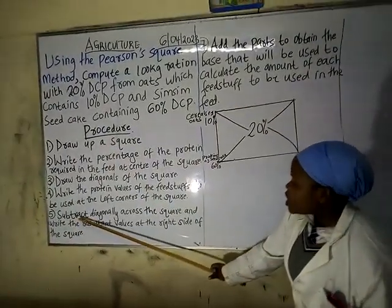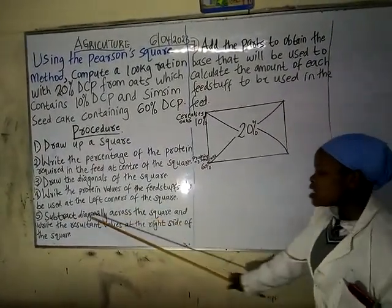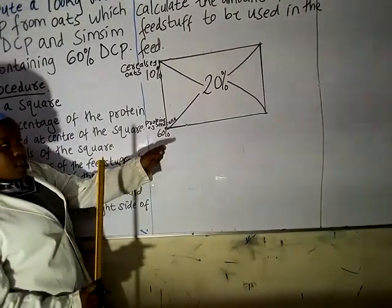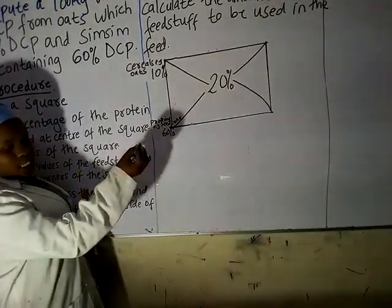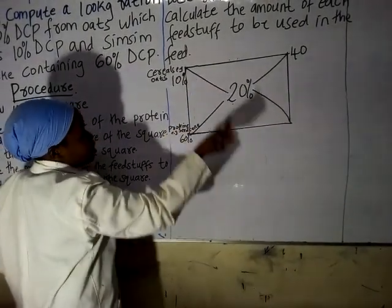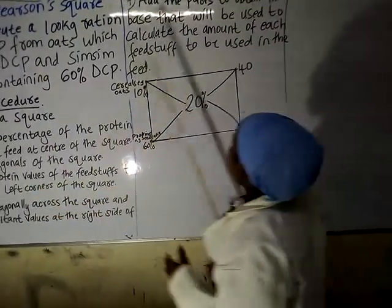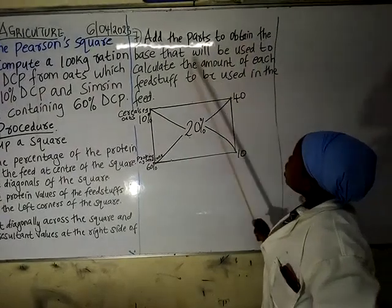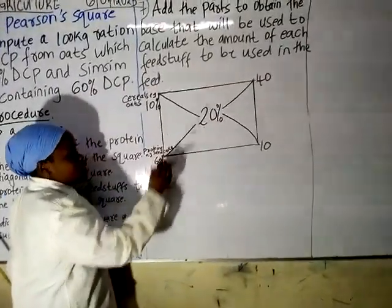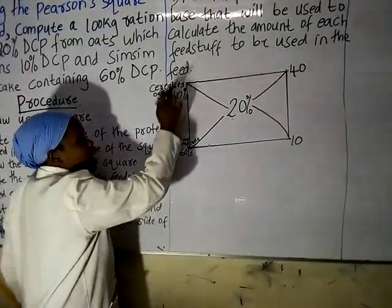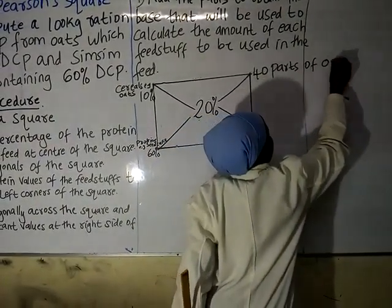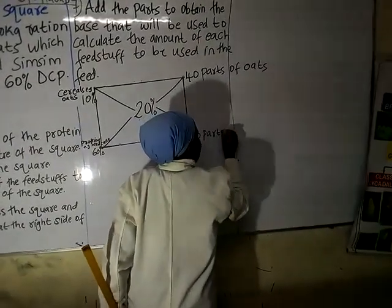The fifth procedure: subtract diagonally across the square and write the resultant values on the right side of the square. You take 60 percent of the seed cake protein minus 20 percent at center, and you get 40. Then take 20 minus 10, and you get 10. This means that 40 is the parts of oats and 10 is the parts of seed cake.